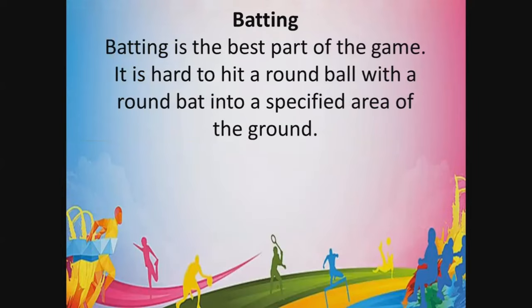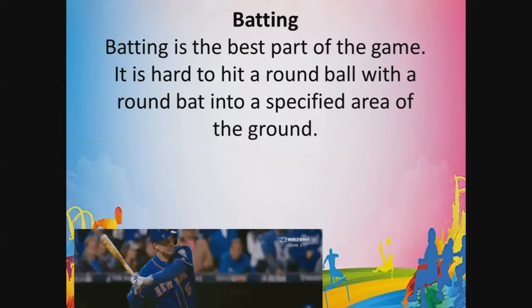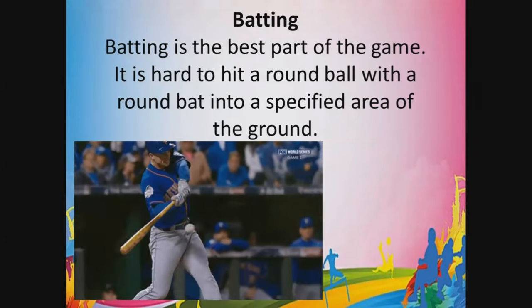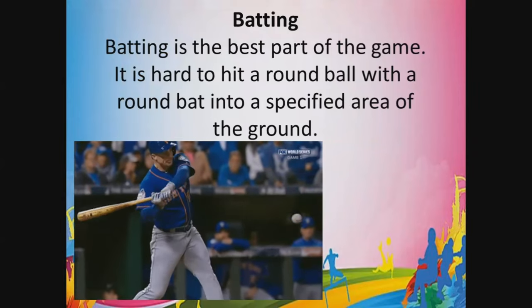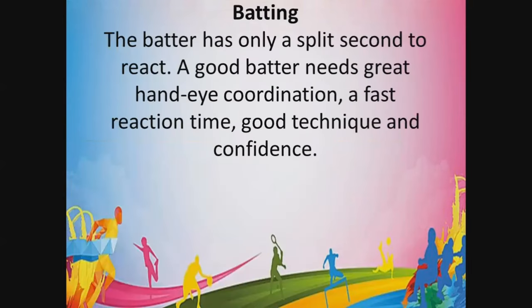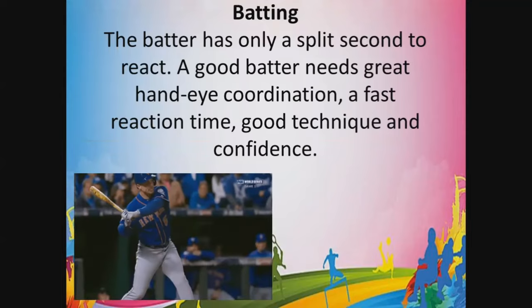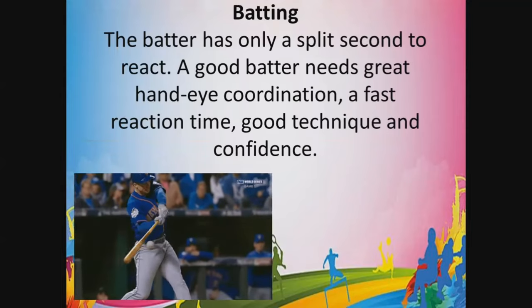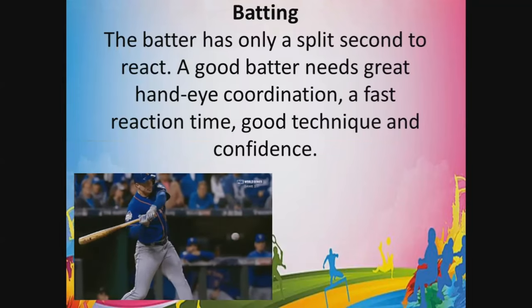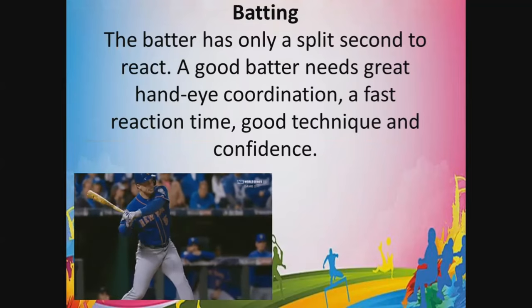The fourth skill in playing baseball is batting. Batting is the best part of the game — it is hard to hit a round ball with a round bat in the specified area of the ground. If you want to become a baseball player, you need to practice this skill in order to master it. Everything happens very quickly, so you need to be fast, alert, focused, and have good hand-eye coordination. There must also be good technique and confidence.